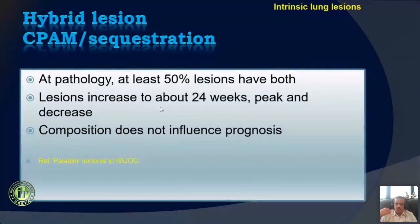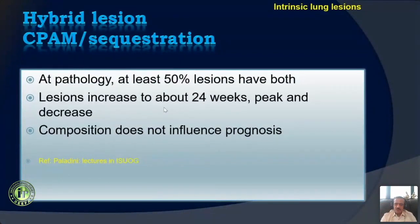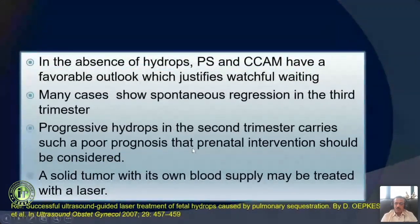Most of these lesions increase in size around 24 to 26 weeks, reach a peak around that time, and then gradually decrease. That is very important — all of them do that. Therefore very often the composition is not a very important issue. What we look out for whenever there is CPAM or pulmonary sequestration is the presence of hydrops. Once we see hydrops, we are worried about the outcome.